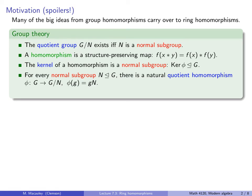Next, we know that for every normal subgroup N of G, there is a natural quotient homomorphism φ from G to G mod N that sends the element g to the coset gN. And finally, there are four standard isomorphism theorems for groups.